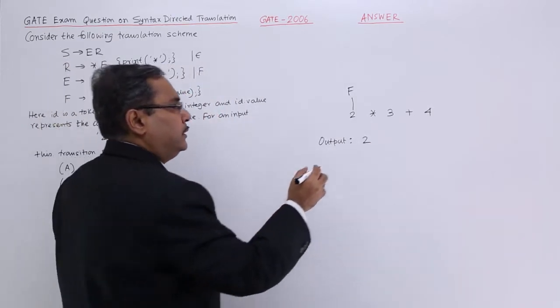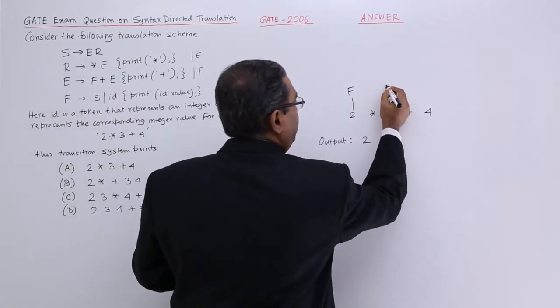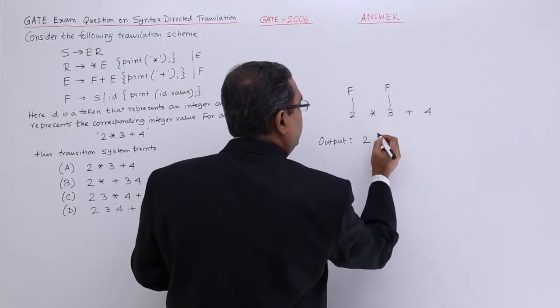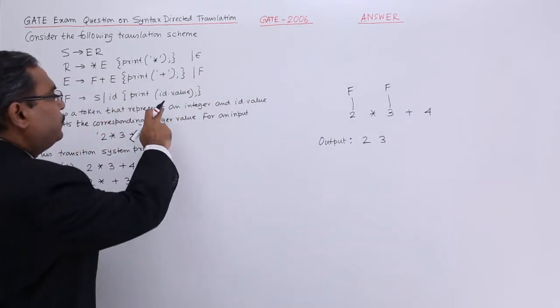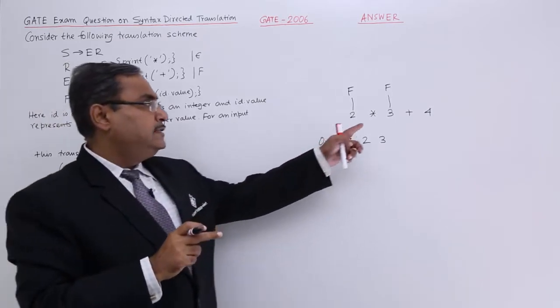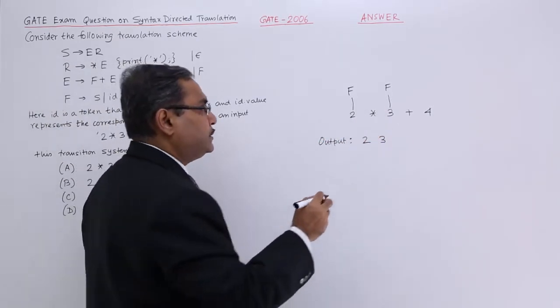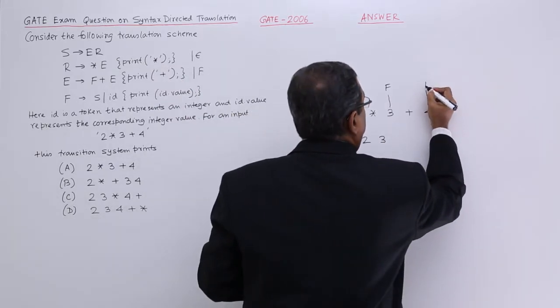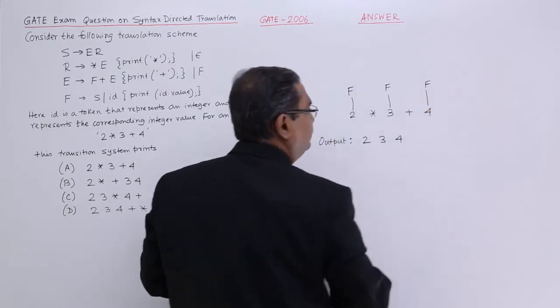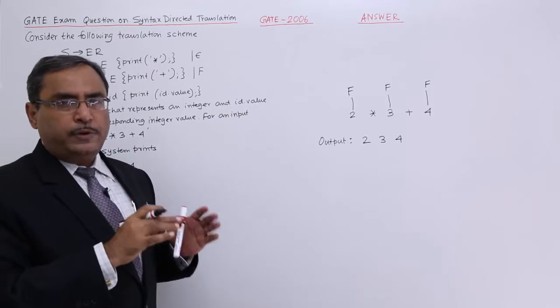Next, F produces ID will be used here. It will print 3. Why? Because it is going to print ID dot value. Here, ID is this one, its value means its integer value. Next, I shall go for this. F will be there and it will print 4.